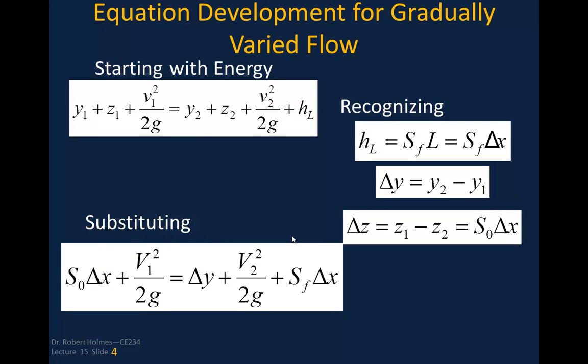Let's start with our equation development for gradually varied flow. We're going to start with the energy equation, and we're going to recognize that the head loss is equal to the friction slope times some distance L — or the energy slope times delta X, same thing. Delta Y is represented by Y2 minus Y1, the depth at the downstream minus the depth at the upstream. And delta Z is equal to the bed slope times delta X. If we substitute those in, we get a new form of the energy equation, which is the beginning of the typical gradually varied flow equation.